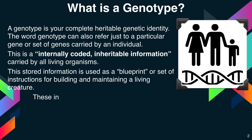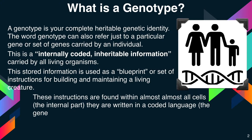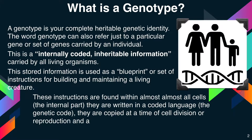These instructions are found within almost all cells. They are written in coded language — the genetic code. They are copied at a time of cell division or reproduction and are passed from one generation to the next.